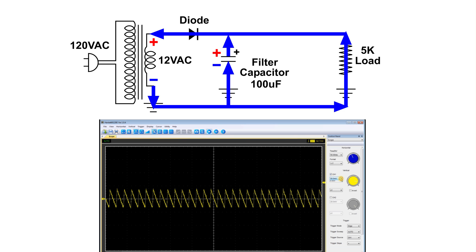Electrons come up through the ground, through the resistor, and then through the diode. Now when the polarity of the secondary reverses, the diode is reverse biased and no electrons flow through it. The electrolytic capacitor that was charged is now discharging through the load resistor — the electrons on the negative plate try to reach the positive plate by going through the load resistor, and that's the ramp part of the sawtooth wave.